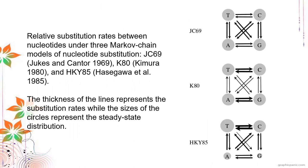Looking at relative substitution rates: the simplest Jukes-Cantor model uses the same penalty for all changes. For Kimura's K80 model, the thickness of the arrows shows greater substitution rates between transitions (purines to purines, pyrimidines to pyrimidines) versus transversions. So smaller penalties apply for transitions and greater penalties for transversions. As models evolve, more complicated scoring rules appear.